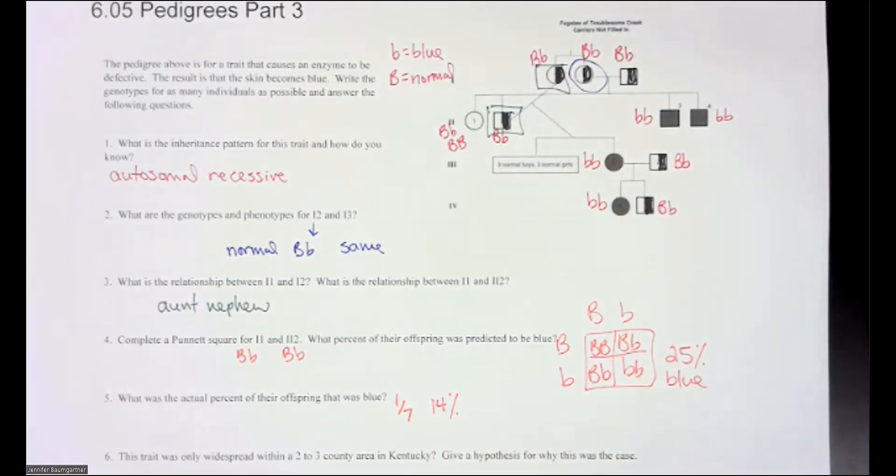So then the last question said, this trait was only widespread within a two to three county area in Kentucky. Give a hypothesis for why this was the case. Well, remember what happened with Cleopatra. We had problems by marrying within the family. So there was a very small population within this area and they tended to not leave. And so they married cousins and they married aunts and uncles, hopefully not brothers and sisters, although it probably happened. And so what you had was you had this trait for methemoglobin getting passed around between this very small group of people.